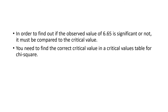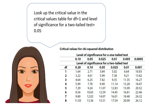In order to find out if the observed value of 6.65 is significant or not, it must be compared to the critical value — that's why you need to find the correct critical value in a critical values table for chi-squared. Look up the critical value for degrees of freedom equals 1 and level of significance for a two-tailed test equals 0.05. We're doing it for a two-tailed test because we had a two-tailed hypothesis at the beginning — we weren't sure whether there was going to be a difference between males and females in terms of studying or not studying in the sixth form area. Looking at the table for a two-tailed test at 0.05 with degrees of freedom 1, the critical value is 3.84.